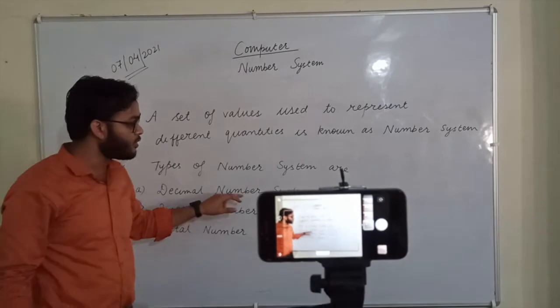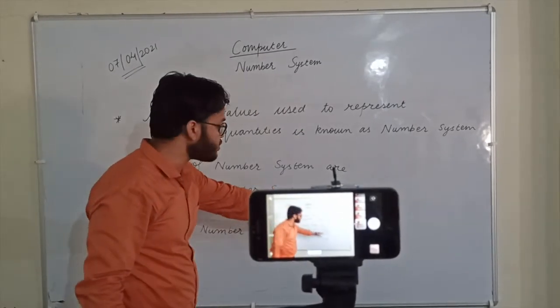A set of values used to represent different quantities is known as Number System. The decimal number system uses digits from 0 to 9.